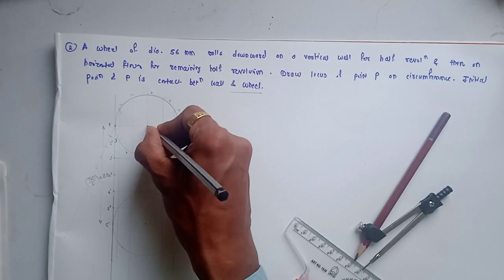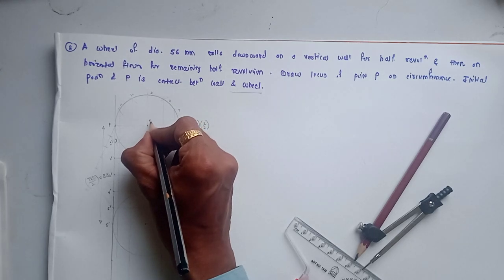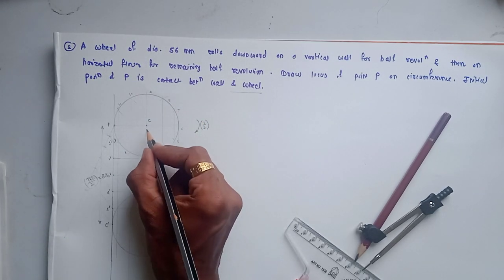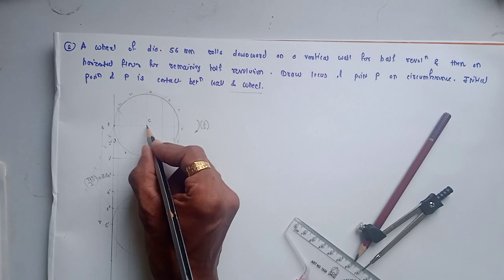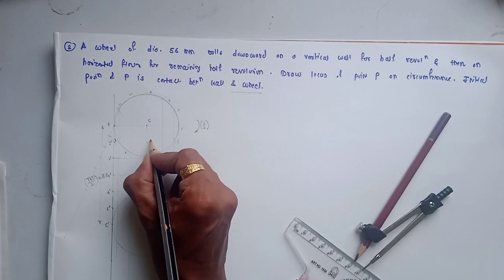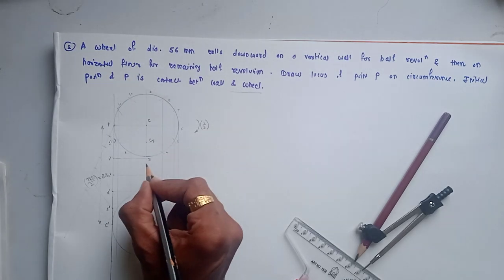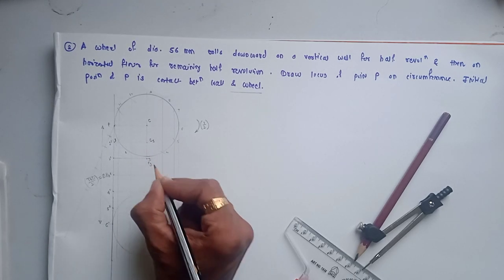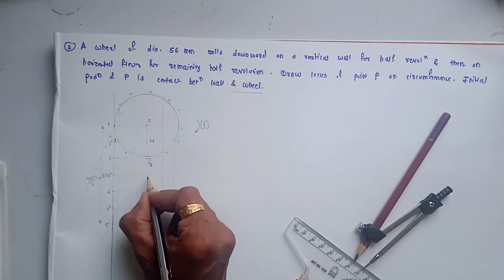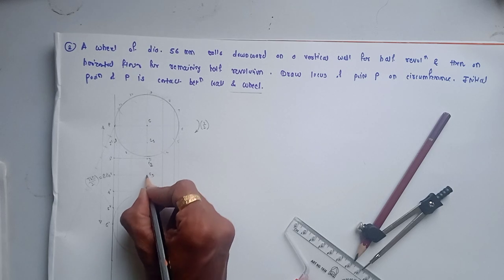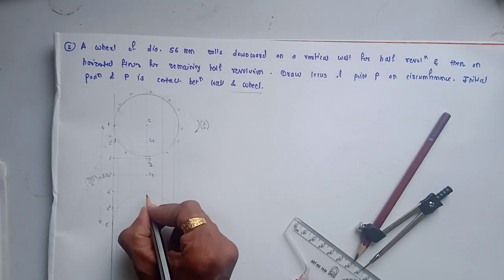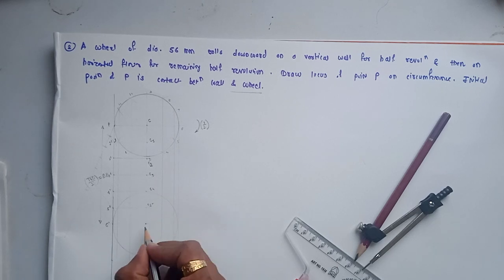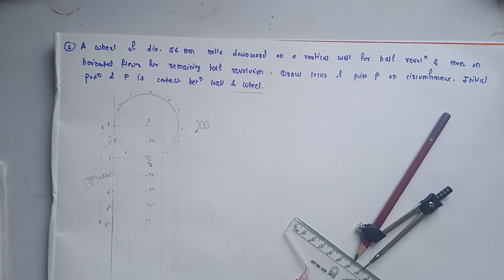Starting from the initial center position C, after one-twelfth revolution the center shifts to C1, then to C2, C3, C4, C5, and finally C6. These are the successive center positions as the circle rolls down the vertical wall through half a revolution.